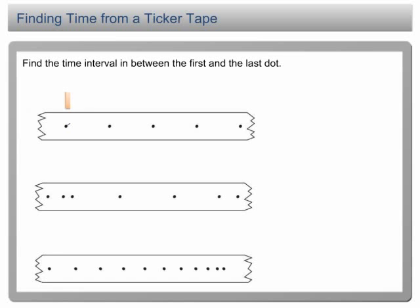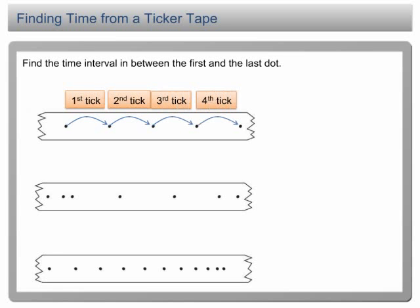Look at the first strip. There are four ticks from the first dot to the last dot. Each tick is equal to 0.02 second. Thus, the time is 4 times 0.02 second equal to 0.08 second. The time from the first dot to the last dot is 0.08 second.